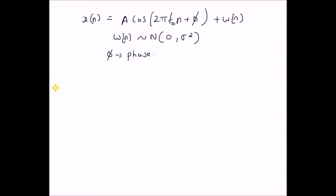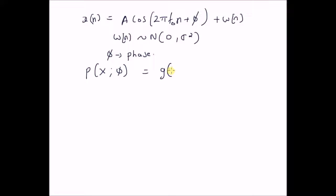The Neyman-Fisher factorization theorem states that if the probability distribution of the observations x with unknown parameter φ can be factorized as a product of two functions — where the first one is g of T(x) and the parameter φ, and the second one is a function of the observations only — then T(x) will be a single sufficient statistic. So, let us see if the probability distribution for this signal model has this structure.